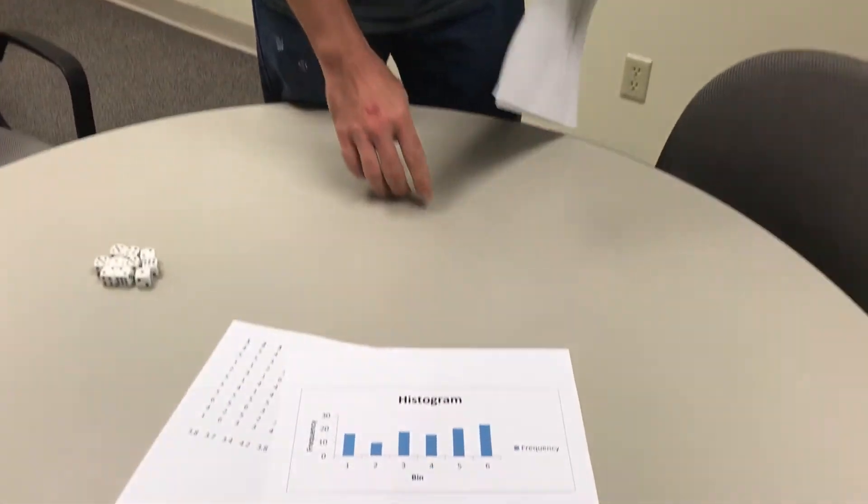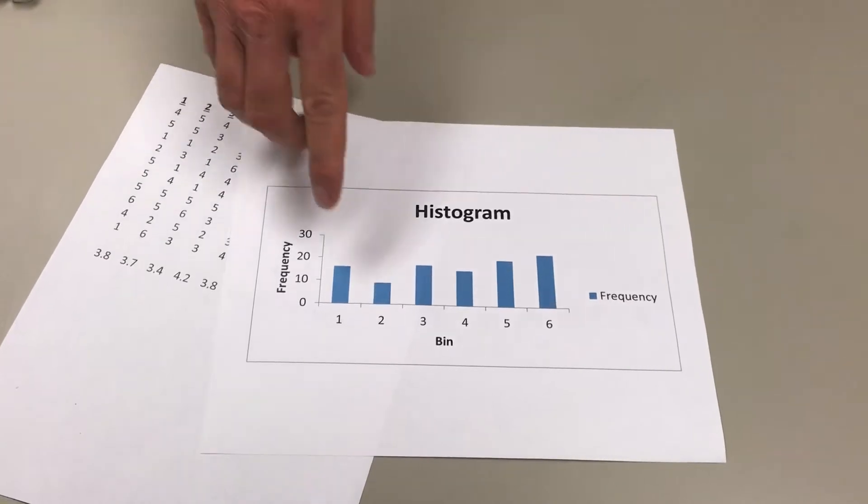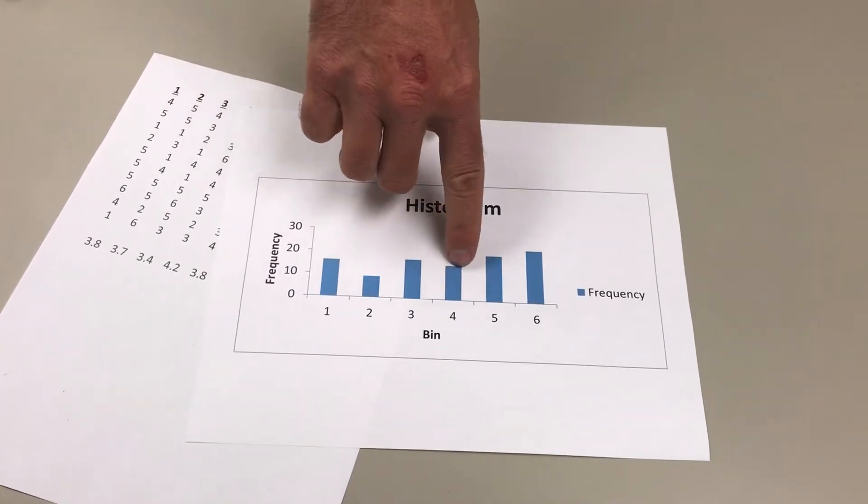Then I made a histogram. Again, since these are dice, it's got to be discrete data, 1, 2, 3, 4, 5, 6.